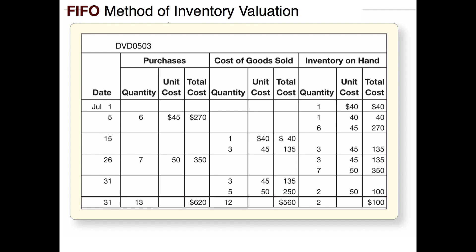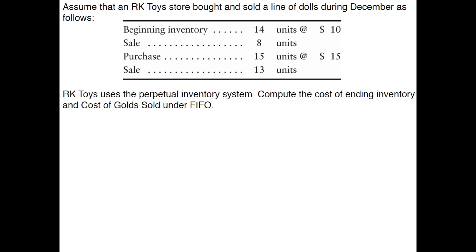Now let's have you try one. Assume that RK Toy Store bought and sold a line of dolls during December as follows: beginning inventory of 14 units at $10 each, then sold 8 units, then purchased 15 at $15 each, then sold 13 units — happening in that order. RK Toys uses the perpetual inventory system. Compute the cost of ending inventory and cost of goods sold under FIFO.